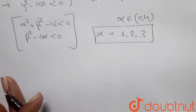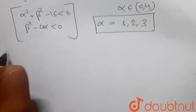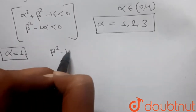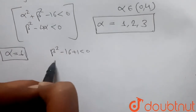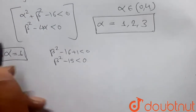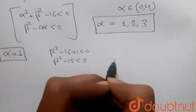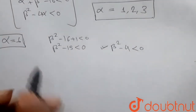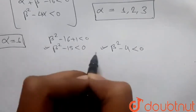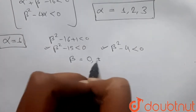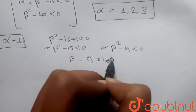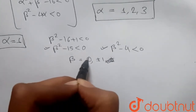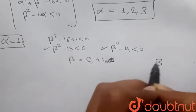Now we have to find the integral values of β. If α = 1, putting this into the circle condition: β² - 15 < 0, and into the parabola condition: β² - 4 < 0. To satisfy both conditions, the common integral values of β are 0, +1, and -1 only — not ±2. So for α = 1, we get three values of β.